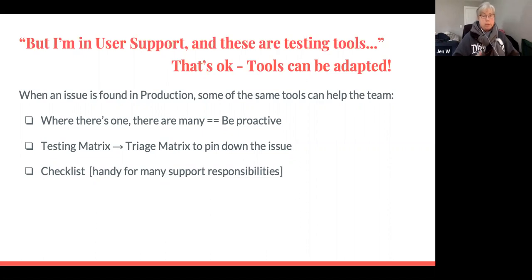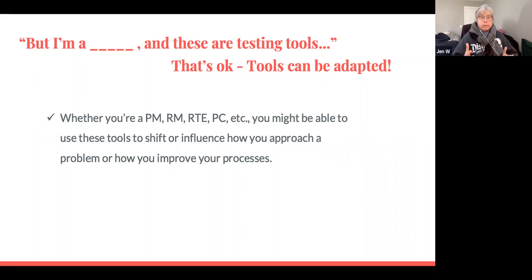These are testing tools, that's true, but again, they can be adapted. You can think about where there's one, there's many. It helps you be proactive and not just act on the one error that just came in through feedback, but take that, think about it, and ask questions to find other possible errors before even more feedback starts coming in. A testing matrix can become a triage matrix to help you pin down the issue and find the problem spots. And a checklist, again, for support responsibilities, I think it's probably one of the best tools out there, so if you're not already using it, consider starting some. But I'm a PM, I'm a PM, I'm a RM, RTE, whatever you are, all the tools can be adapted, probably to grocery shopping for that matter. They're not tools just for testing, they're more of a mindset of a toolbox for you to consider using in your world.